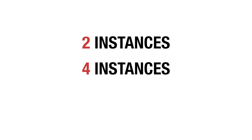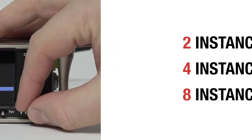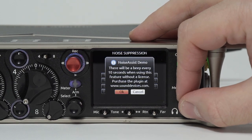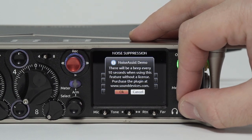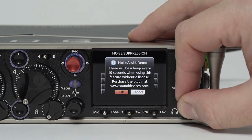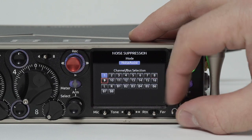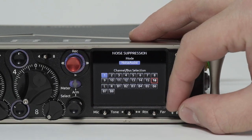Noise Assist can be purchased in two, four, or eight instance versions. The two-instance version of Noise Assist is included as a demo on your 8-Series running firmware version 7.0 or higher.